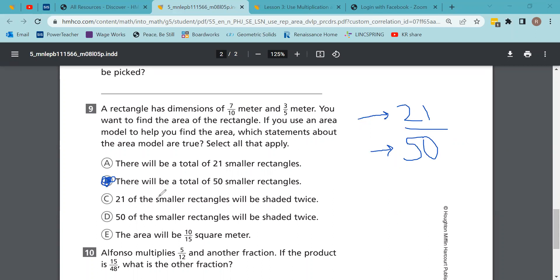21 of the smaller rectangles will be shaded twice. 50 of the smaller rectangles will be shaded twice - well, 50 is the whole thing, that won't be shaded twice. So that 21 out of 50 is what would be shaded twice when you go across and you go up and down. Again, you don't have to draw this out as a model. It's a nice visual, but I just like to use them as learning aids and not like a required thing. The area will be 21-fiftieths of a square meter, not 10-fifteenths.